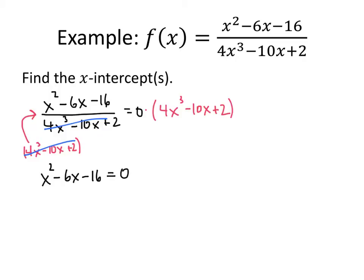So in other words, it doesn't really matter what the denominator of this function is. We just need to set the numerator equal to 0. Now this is a quadratic equation that can be factored. So we get (x - 8)(x + 2). And that means that x equals 8 or x equals negative 2. So those are our 2 x-intercepts in this case.